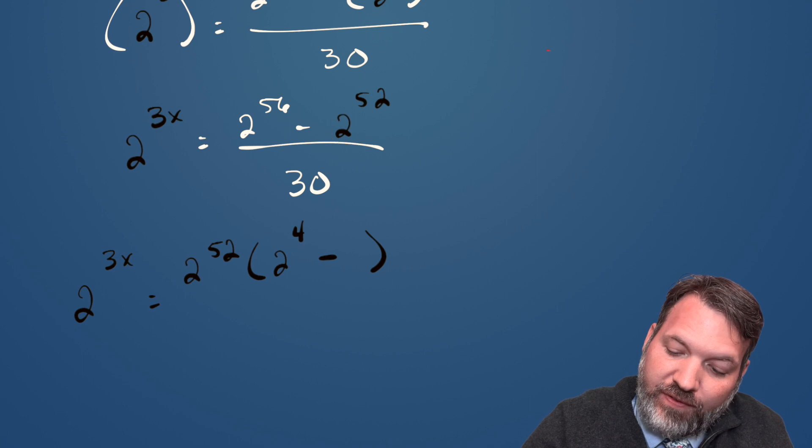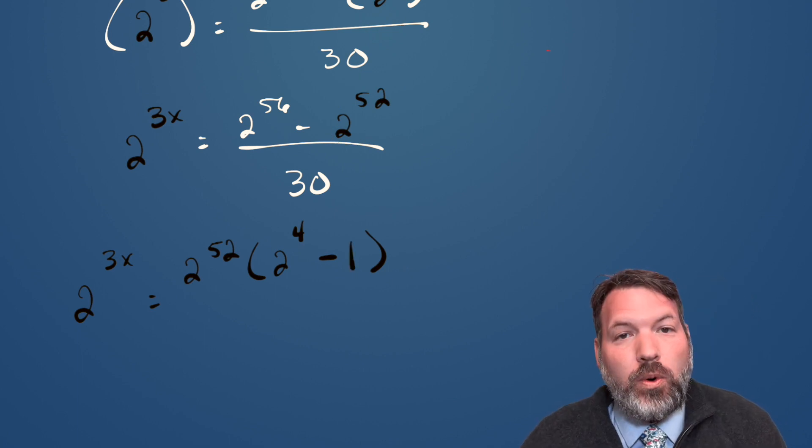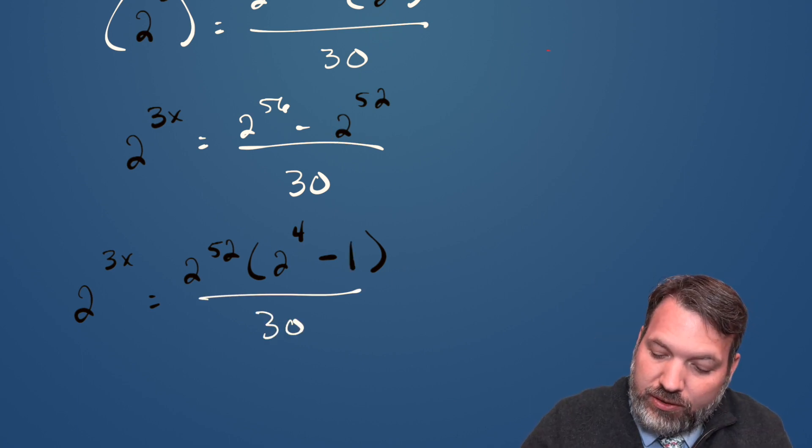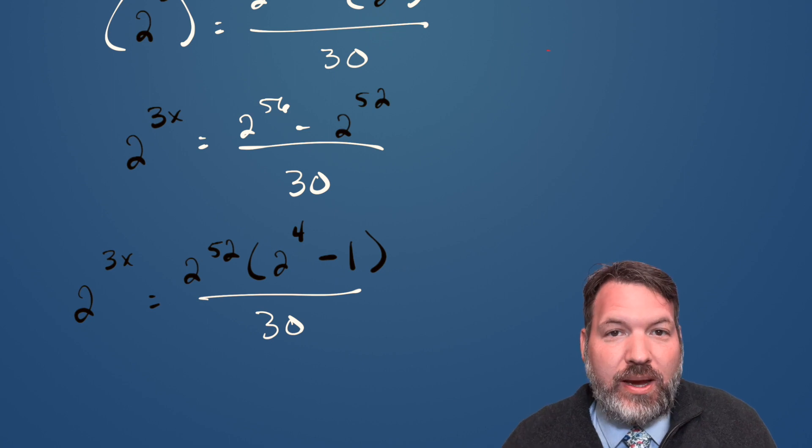And of course, since we're factoring the 2 to the 52nd out of itself, it leaves 1. That whole thing is still divided by 30, and it's almost time to deal with that 30.